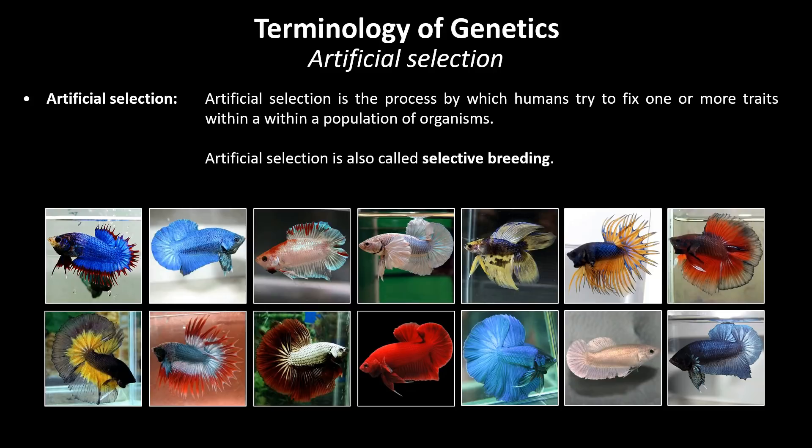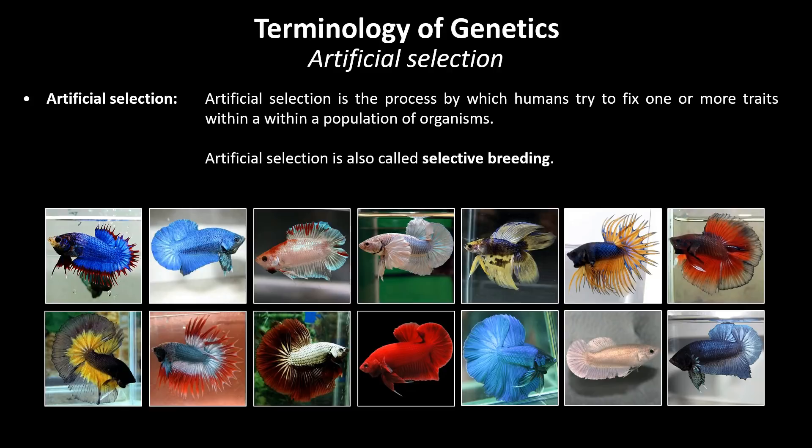As terms like inbreeding, line breeding and outcrossing go hand in hand with selective breeding, a better understanding of what these terms mean can be valuable knowledge. With the term inbreeding we refer to close inbreeding: a systematic program of breeding closely related animals such as brother to sister, and back crosses between parent and offspring.